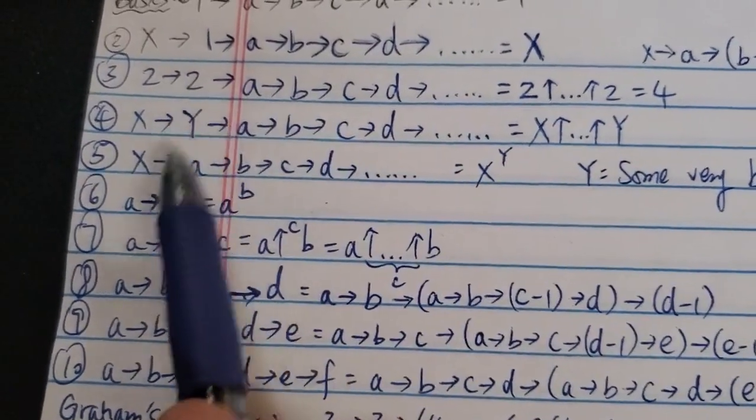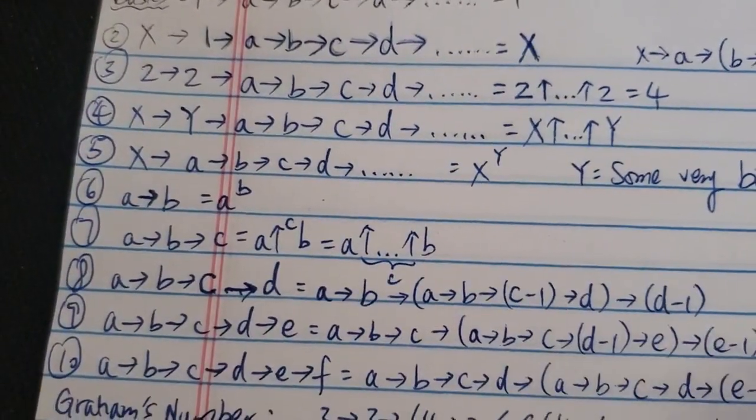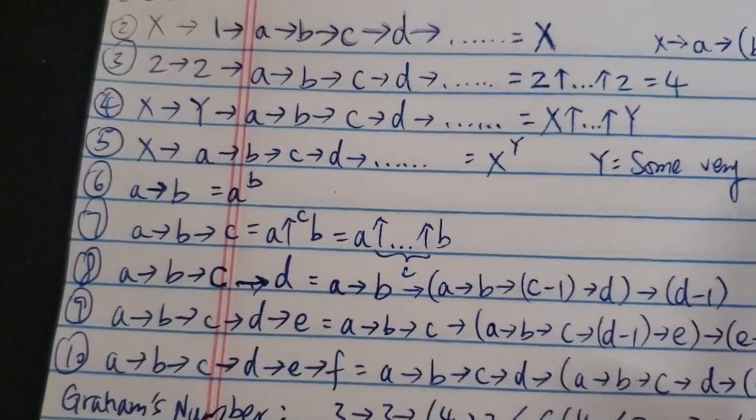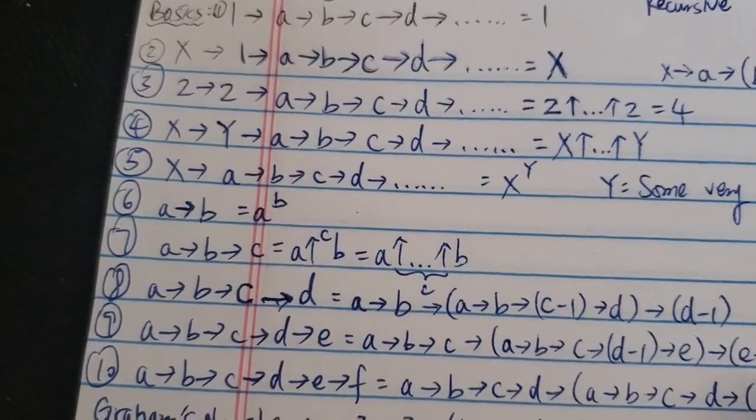And X→A→... it just equals to X to some very big power of Y. So Y is some very big number. So as you can see, if the first number is 10, then the whole chain, doesn't matter how long it is, it's just some power of 10. So here, you know the basic rules.